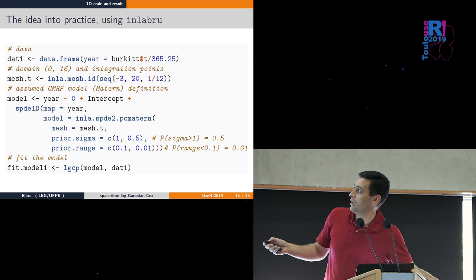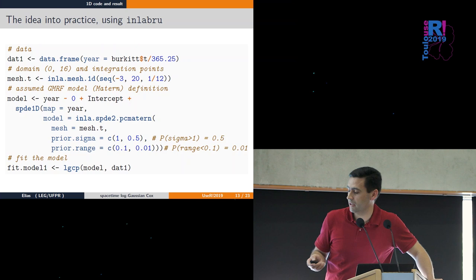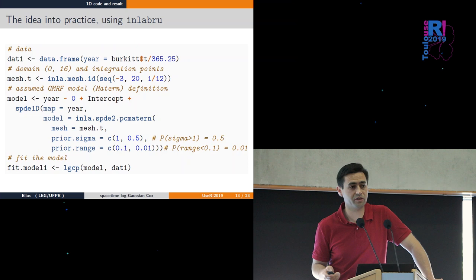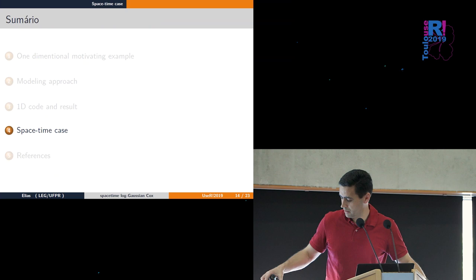Here's the PC prior for the Matérn field with parameters like marginal variance and range where we set prior knowledge. Then one line fits the model given the previous setup.